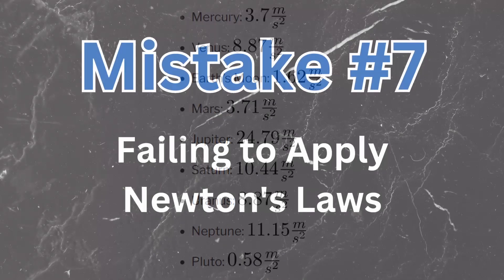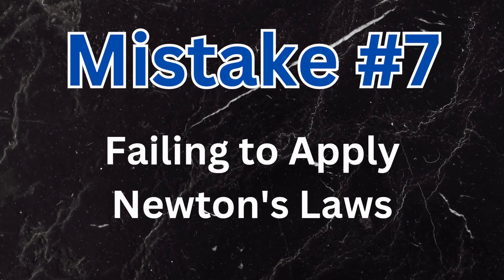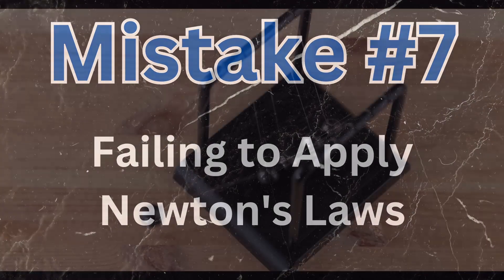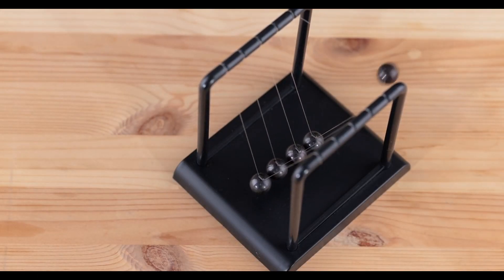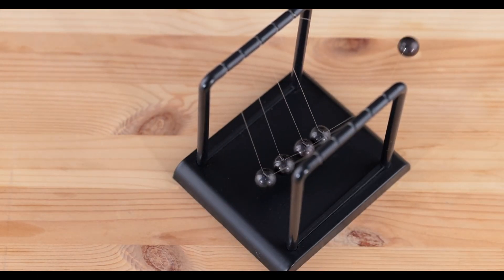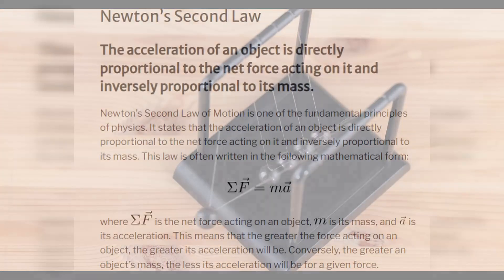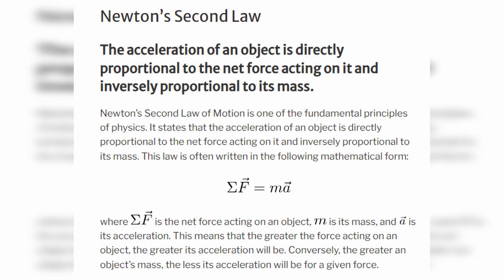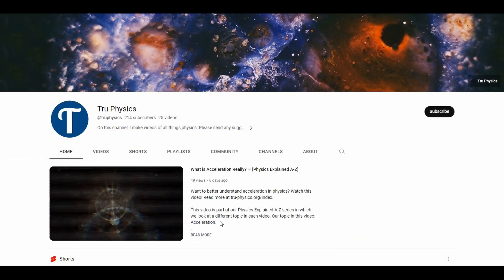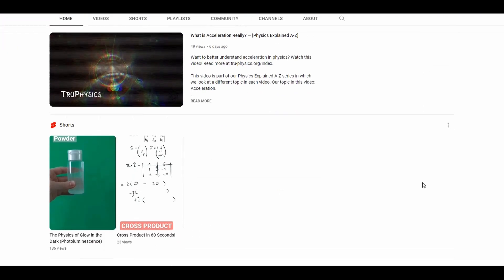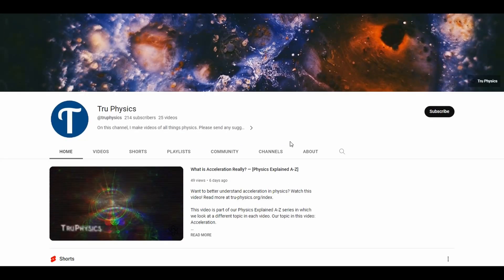For number seven we got failing to apply Newton's laws. Newton's laws of motion form the foundation of mechanics, but beginners often don't apply them. This is especially true for Newton's second law: F equals ma. Memorize this formula. Commit it to memory as Newton's second law. Don't ever forget it. Before we get to the final tip, please consider subscribing if you found this video useful. I'll be uploading more content throughout the semester, all of it focused on helping you master all sorts of different physics topics.